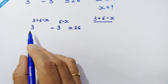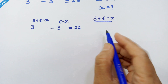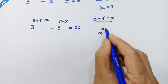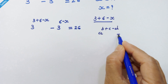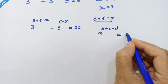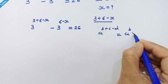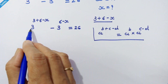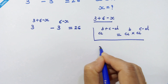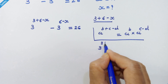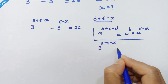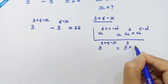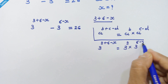Now we will rewrite this part using the rule of exponents: if we have a raised to (b plus c), it can be written as a raised to b, into a raised to c. So here, 3 raised to (3 plus 6 minus x) can be written as 3 raised to 3, into 3 raised to (6 minus x).